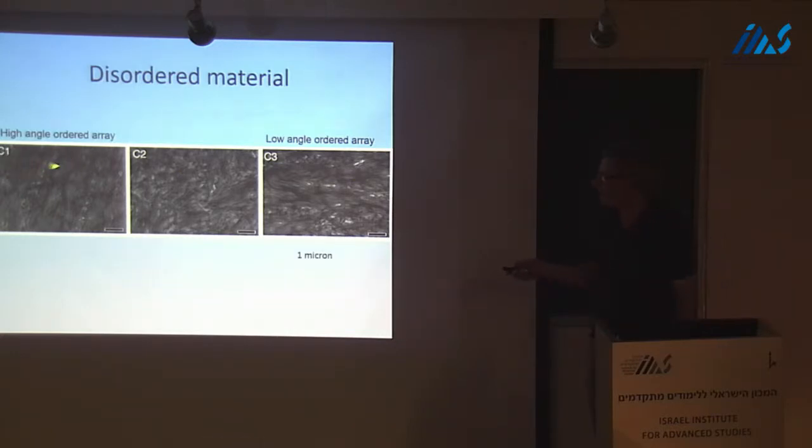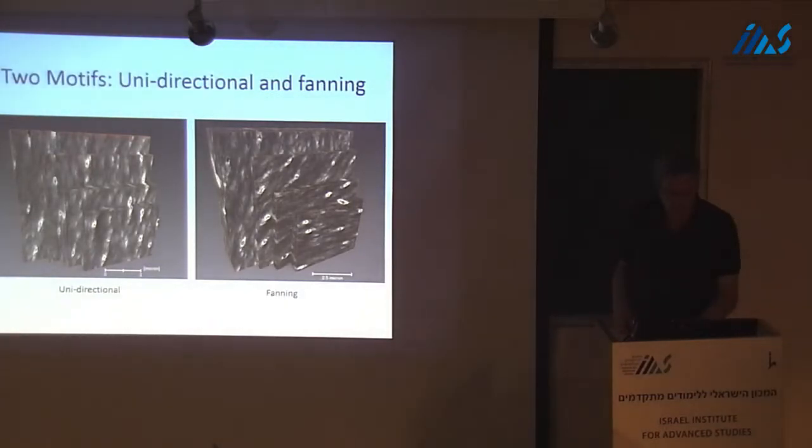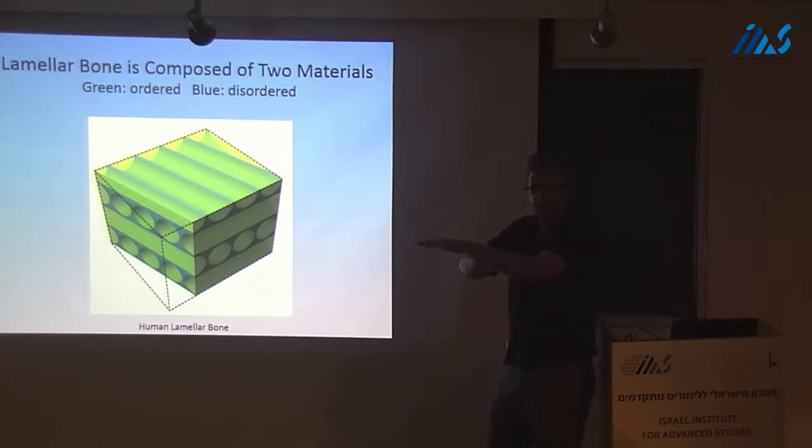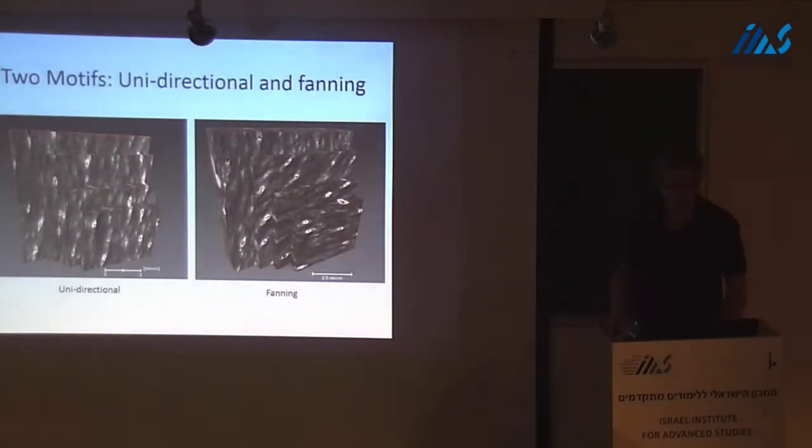So these are the three different motifs. High angle. This is human bone, by the way. High angle, disordered, and low angle. And that's the plywood type of structure. So when you model this, and you try to put this all into three dimensions, the green cylinders are the bundles of aligned collagen fibrils. The blue is the disordered material. And the disordered material basically envelops individual bundles. And when you change direction, then the disordered material fills in as a layer across the mismatch. On this basis, we claim that bone is really composed of two different materials.